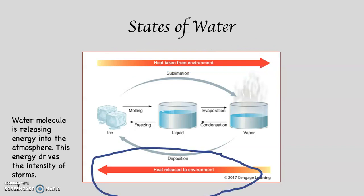Notice along the bottom of the diagram: as water goes from a gas to a liquid to a solid, heat is released into the environment. The water molecule is slowing down, losing energy, and it dumps that energy into the atmosphere. This is what drives storms.